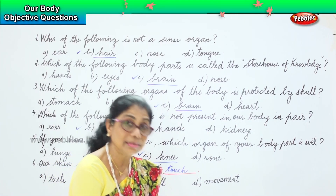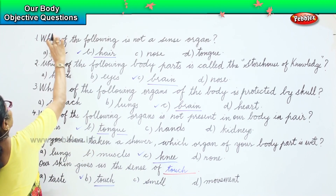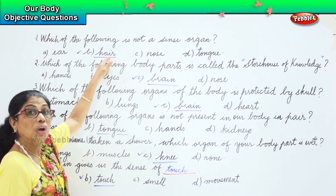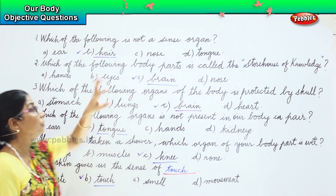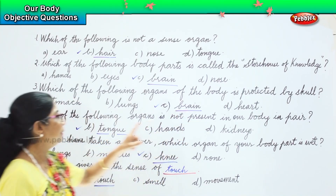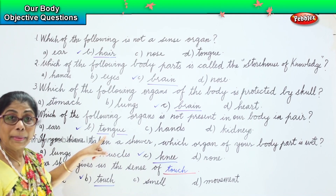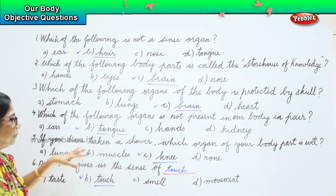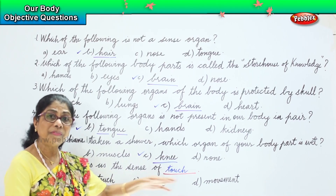Let's review the answers. Question one: which of the following is not a sense organ? Hair is not a sense organ. Question two: which body part is called the storehouse of knowledge? Brain. Question three: which organ is protected by the skull? Brain. Question four: which organ is not present in pairs? Tongue — only one tongue. Question five: if you have taken a shower, which body part is wet? Knee. Finally, our skin gives us the sense of touch.